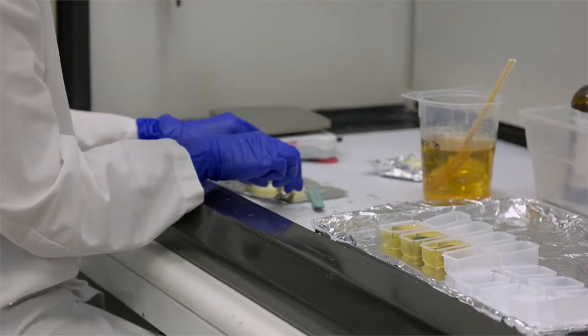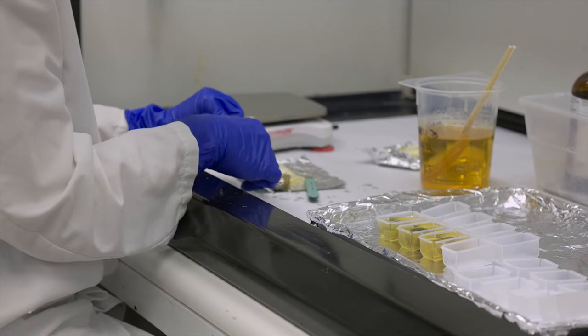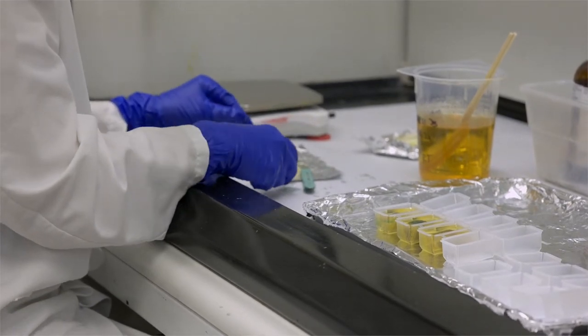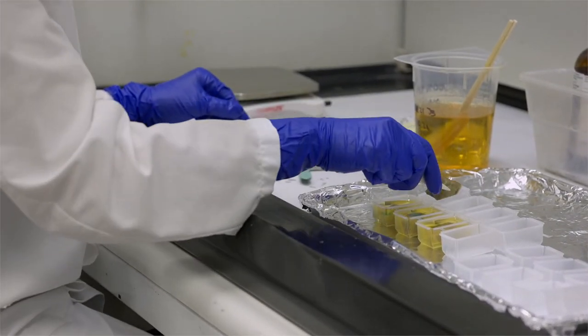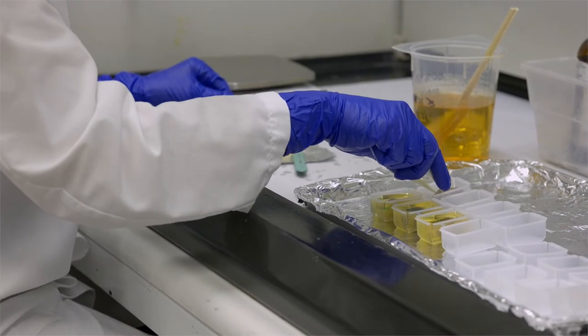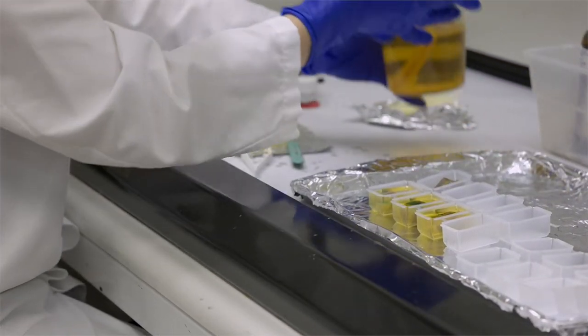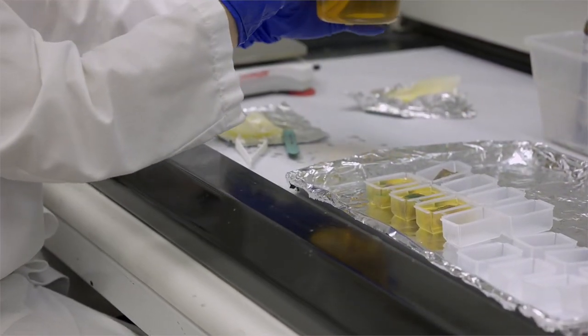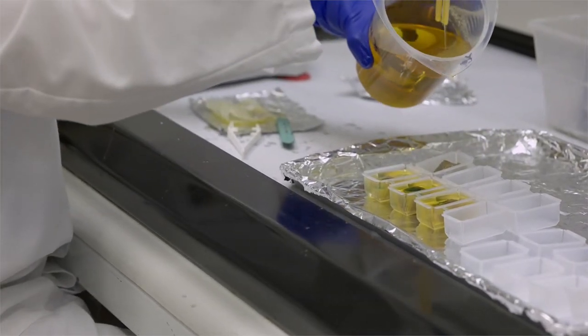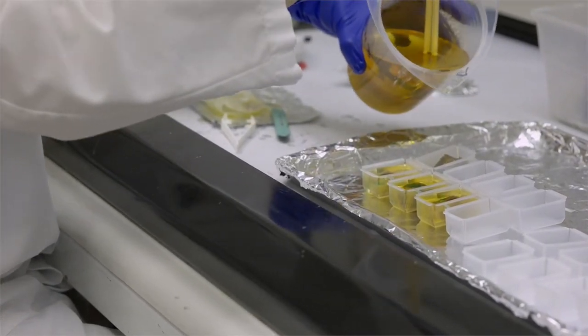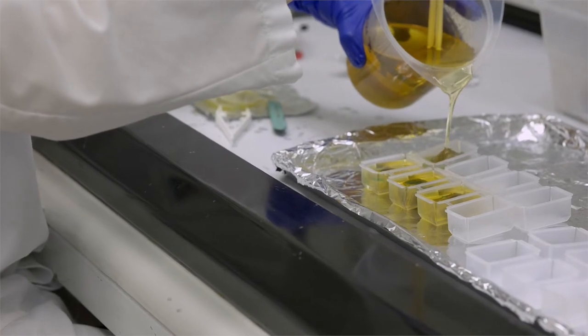Once infiltration of the spur resin is complete, an appropriate size mold is chosen to embed the sample. The sample is arranged in the mold with 100% spur epoxy resin. Trapped air is removed and the mold is placed in a 60 degree centigrade oven for 24 to 72 hours to harden.